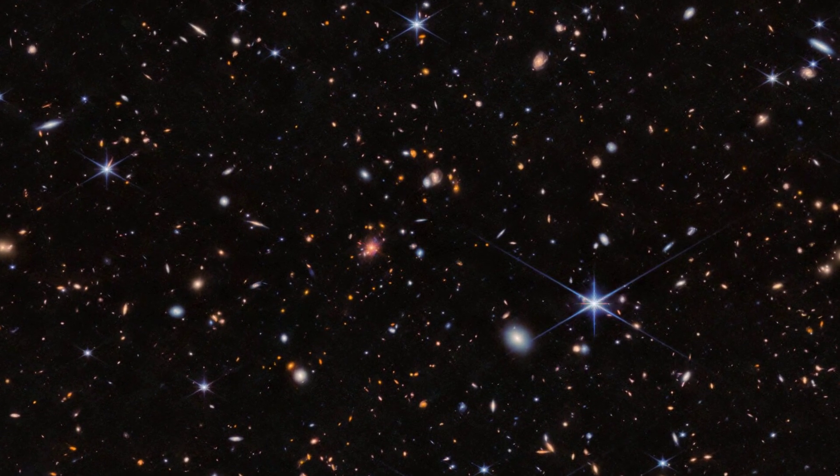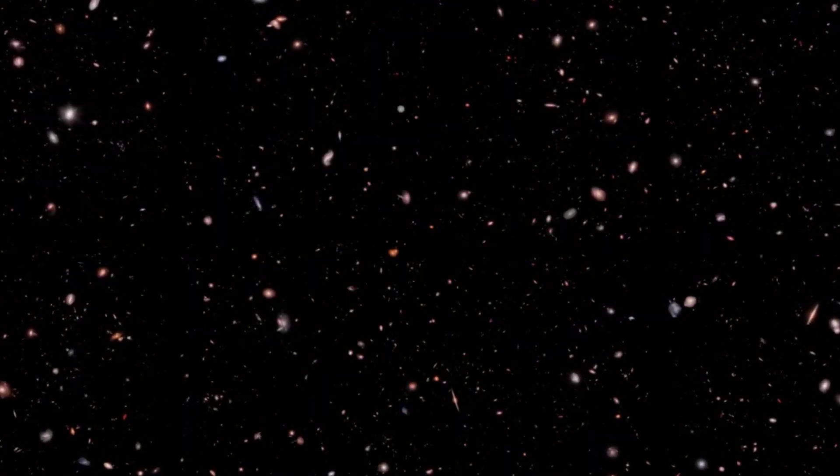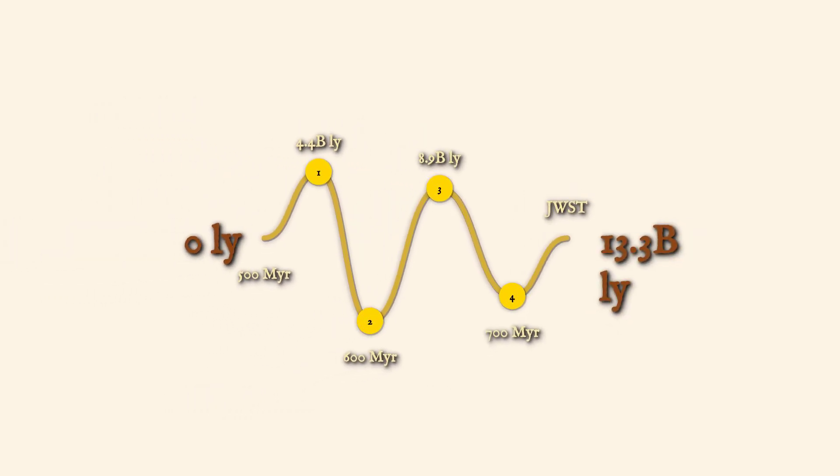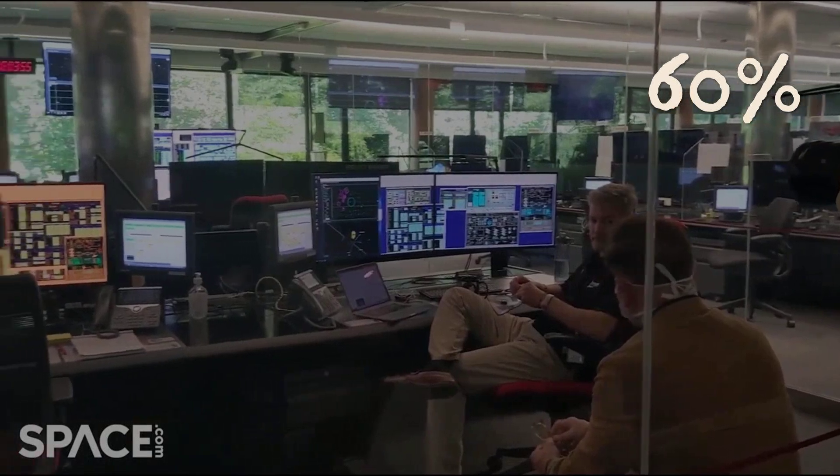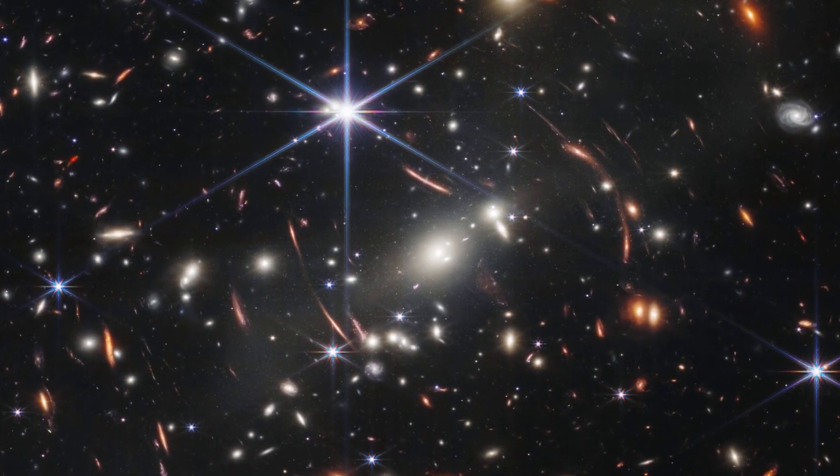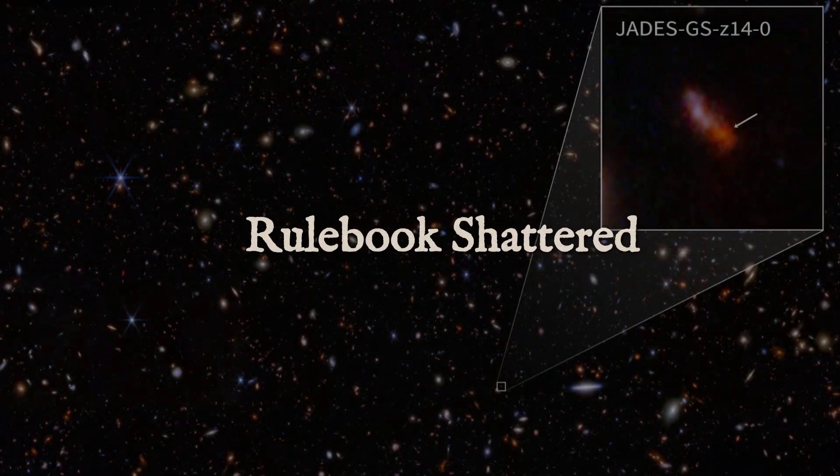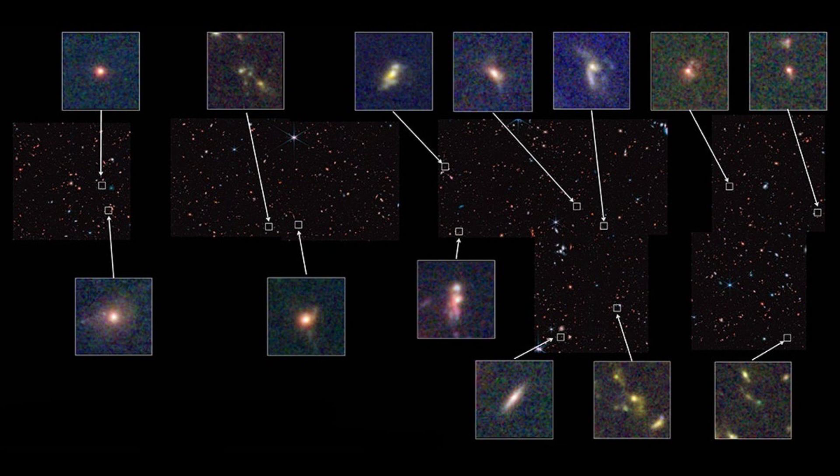The rulebook says the universe should be filled with dim, scattered proto-galaxies at this age. Webb finds cosmic cities, already bustling, their light crossing more than 13 billion years to reach us. Every time astronomers run the numbers, the contradiction grows. The model predicts a universe that's just not there in Webb's images. Galaxies this big, this early, should be impossible. And yet, there they are, proof that the universe isn't playing by the rules we thought were set in stone.